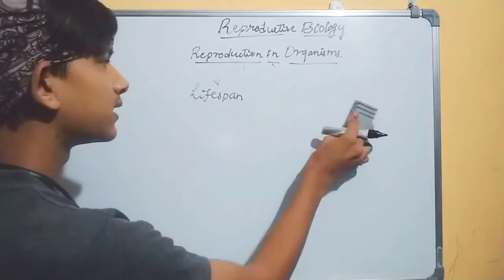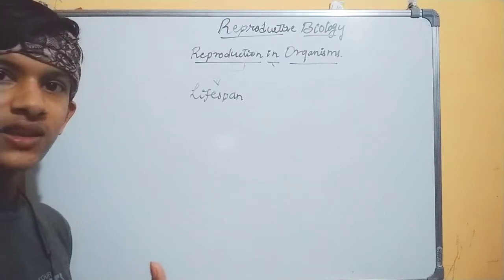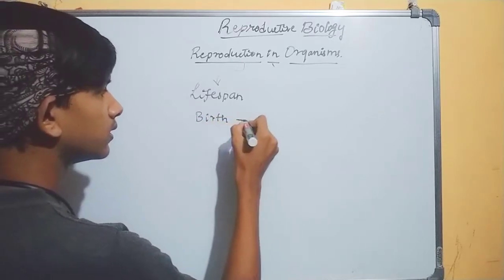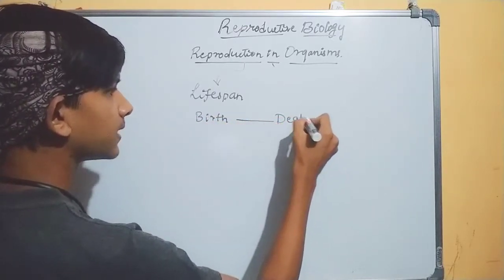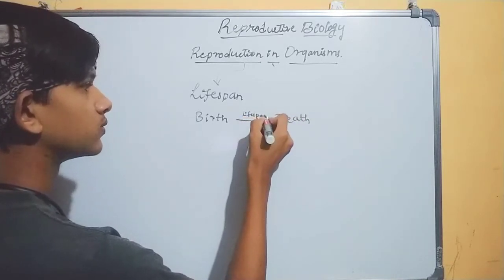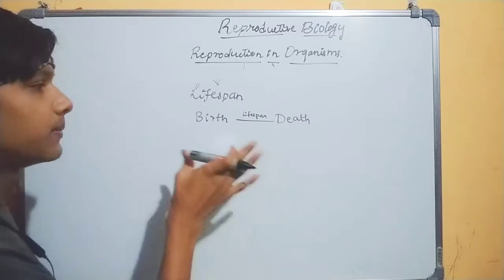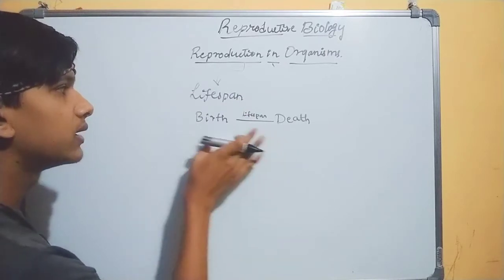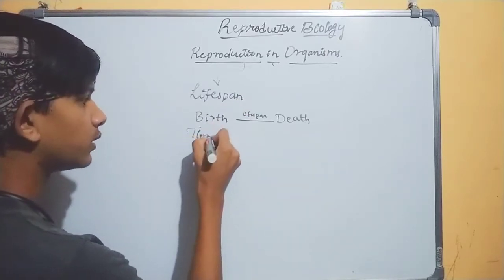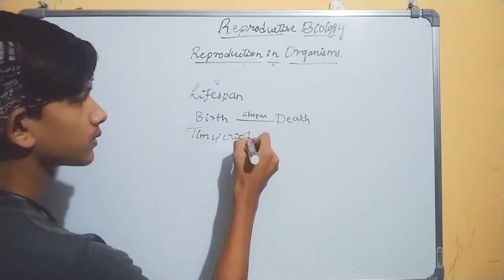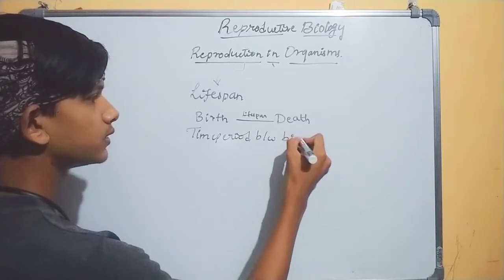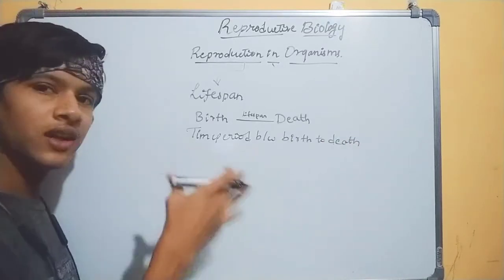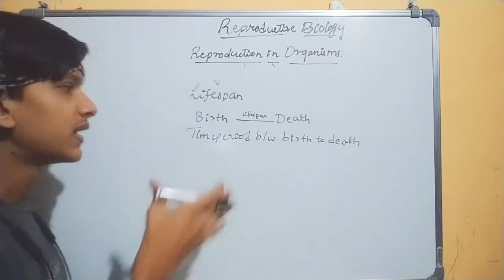Under life span, we have a definition. In this definition, we will discuss birth and death. This is our life span. Life span is the time period between birth to death.